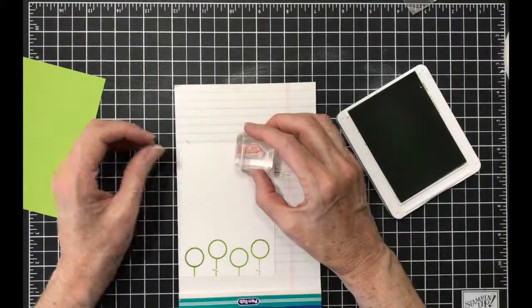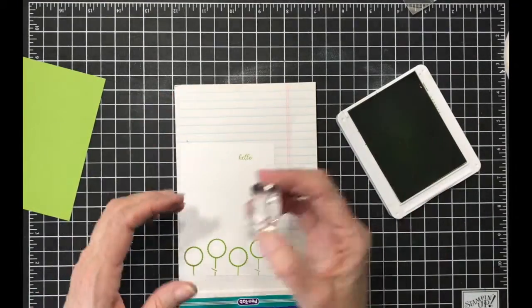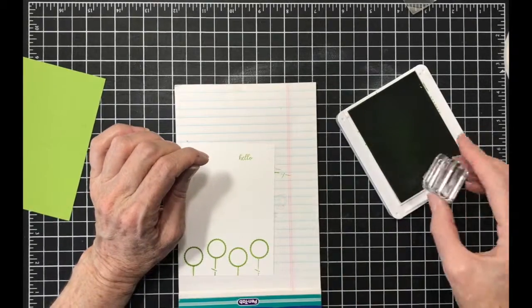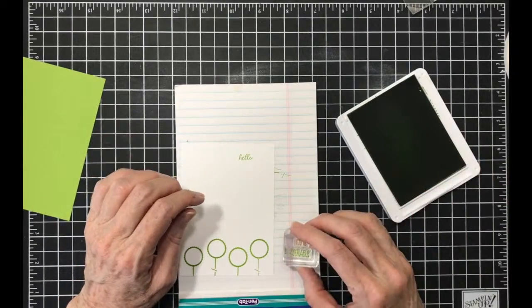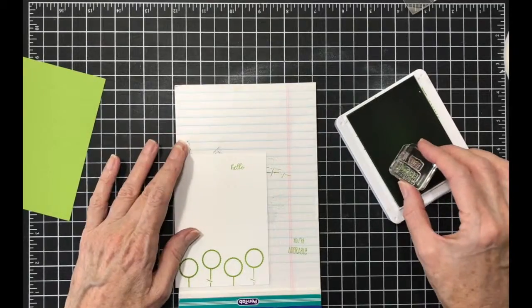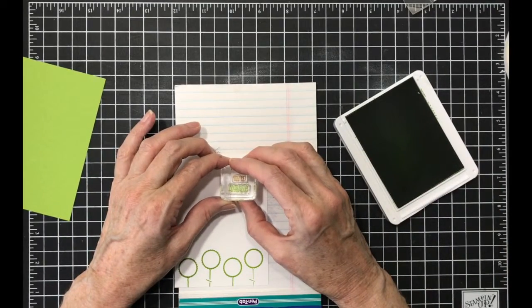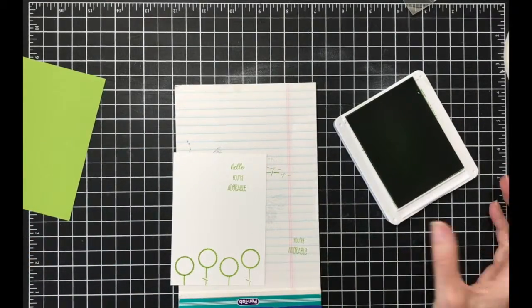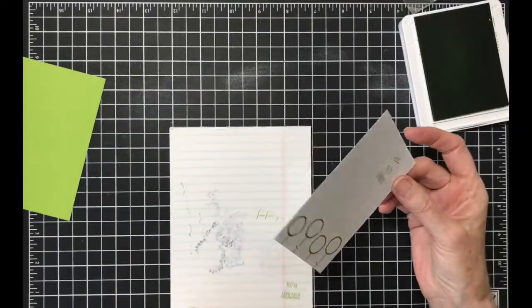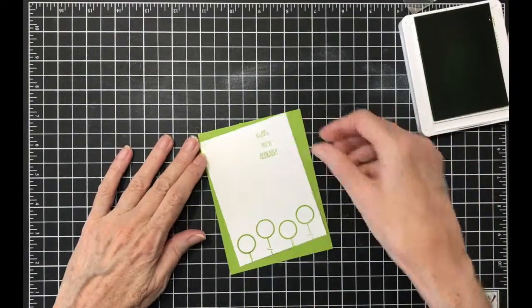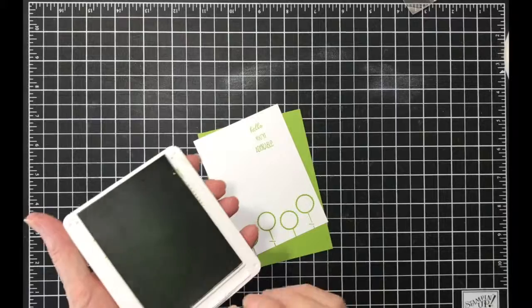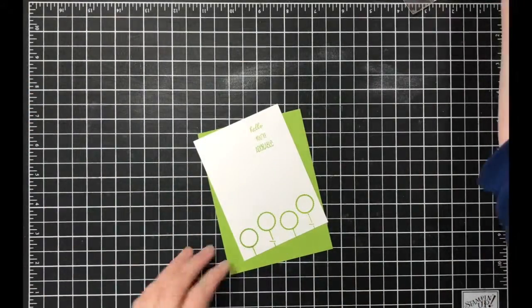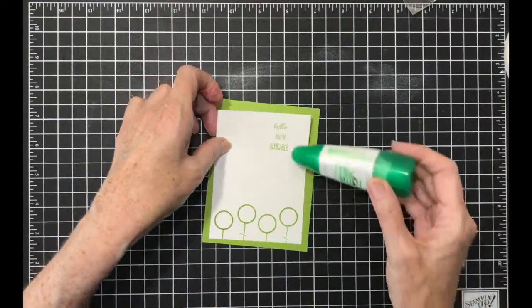I'm gonna take my hello and I'm gonna stamp it up here in the corner. And then what I did was I took your adorable and put it on the same block. I just need to make sure that it's on there straight. I'm gonna put it underneath, and so it says hello you're adorable.